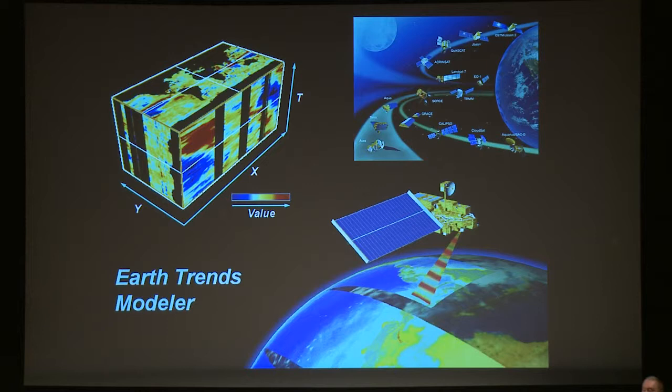I'm going to talk tonight about some developments we made in what's called the Earth Transmodeler, a tool set specifically designed for looking at Earth observation data. This is satellite data — image data collected repeatedly over time in a regular time interval. Depending upon the system, maybe daily, maybe monthly, and so on.